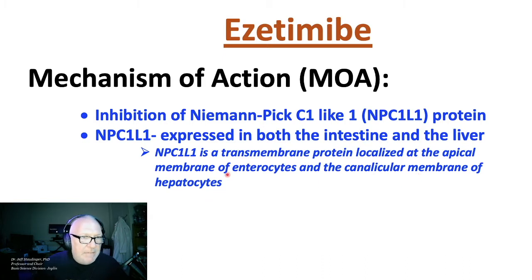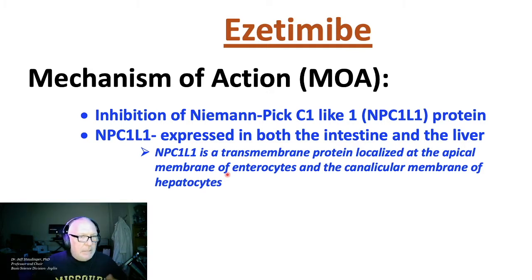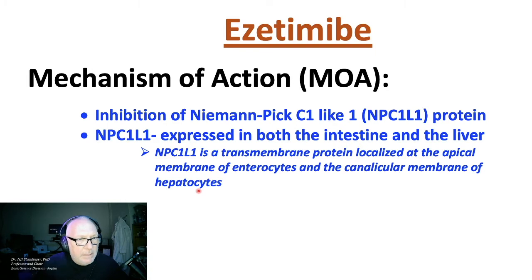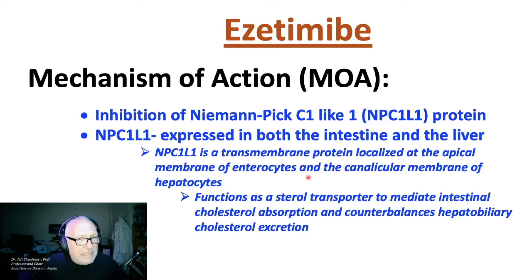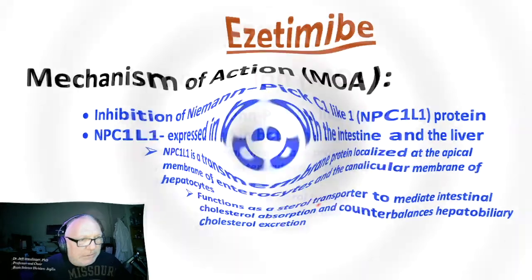The apical membrane of enterocytes is between the lumen of the intestine and the blood, while the canalicular membrane of hepatocytes is between the blood and the bile. NPC1L1 functions as a sterol transporter to mediate intestinal absorption and counterbalances hepatobiliary cholesterol excretion.